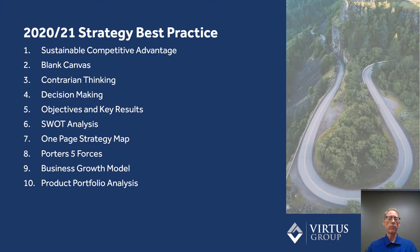You'll see on here there are 10 items that are worth considering for your planning process. I'm only going to touch on the first four of them today: sustainable competitive advantage, blank canvas, contrarian thinking, and decision making.